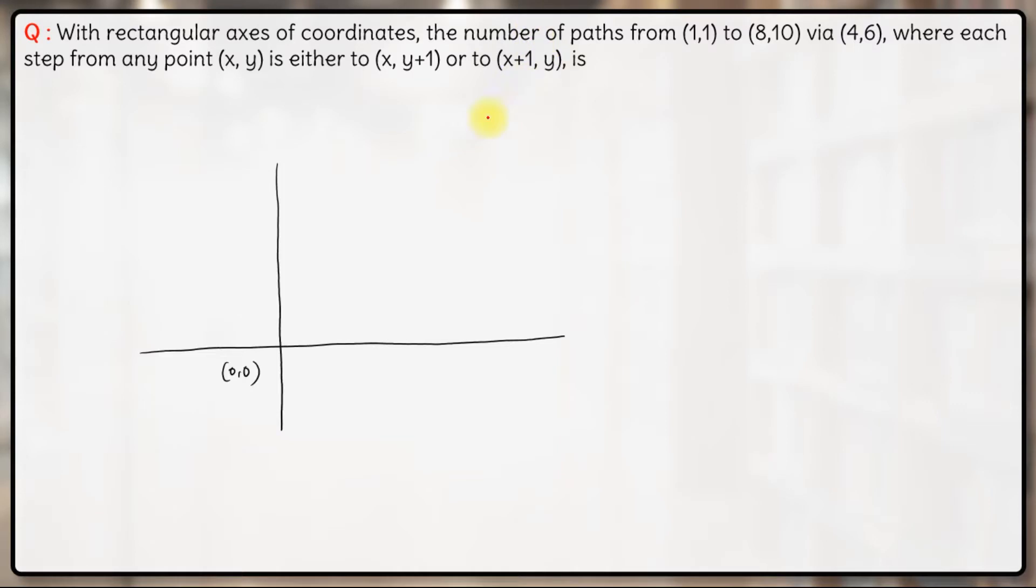The number of paths from (1,1), so (1,1) will be a point over here, to (8,10). (8,10) will be a point over here. Let me draw it slightly further. (8,10) will be a point over here via (4,6). So we have to go from (1,1) to (8,10) via (4,6).